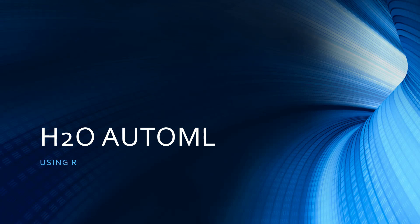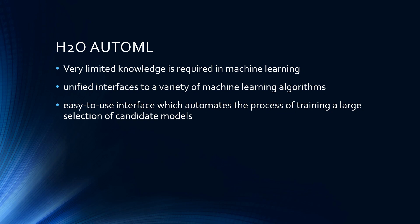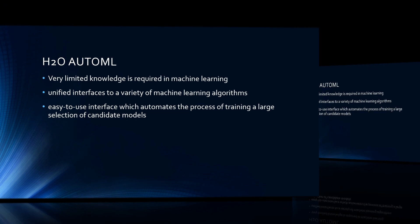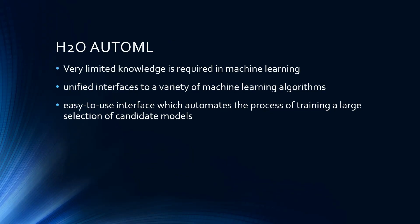Hi everyone, today I'm going to talk about the h2o AutoML package in R, which is a very useful package for machine learning. If you don't have a very big knowledge in machine learning, this package will be very useful to you. It is a unified interface, so you can run a variety of machine learning and deep learning models using this package.